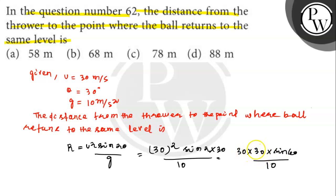This is zero, zero, cancel. 30 into 3 is 90. So, answer is 78 meter.